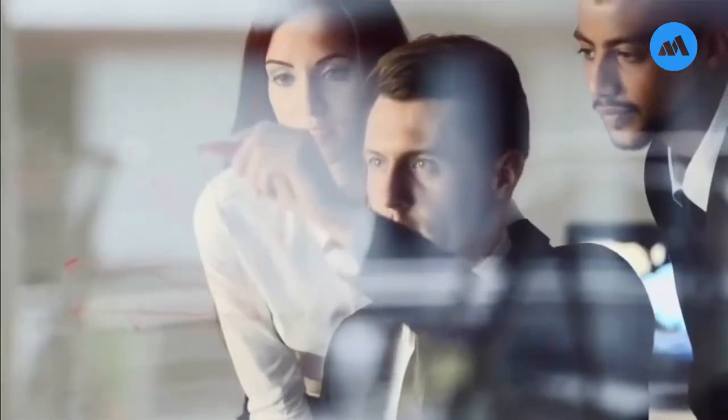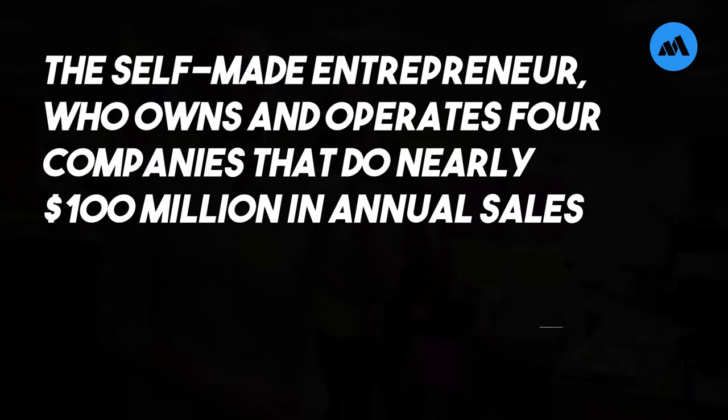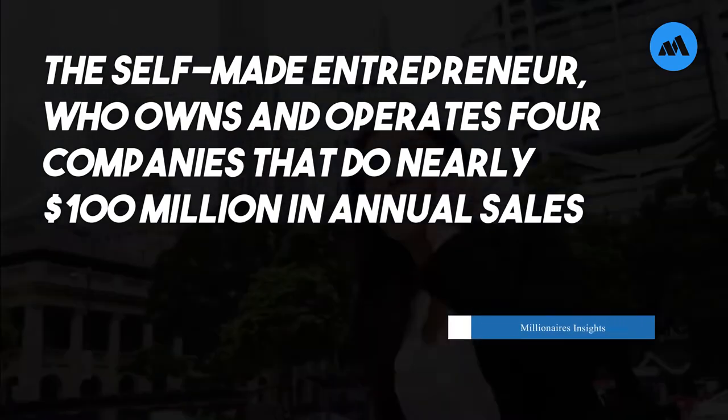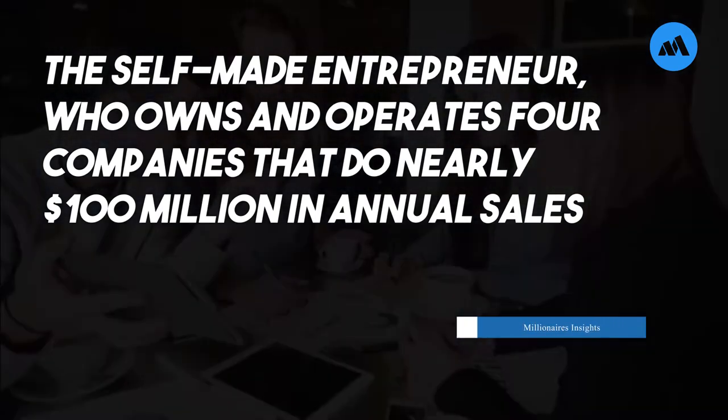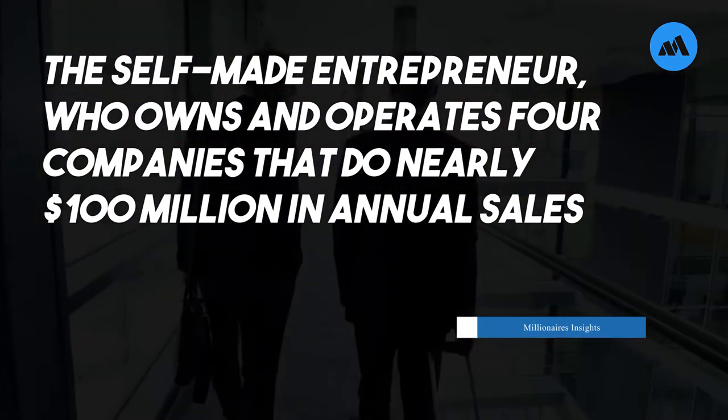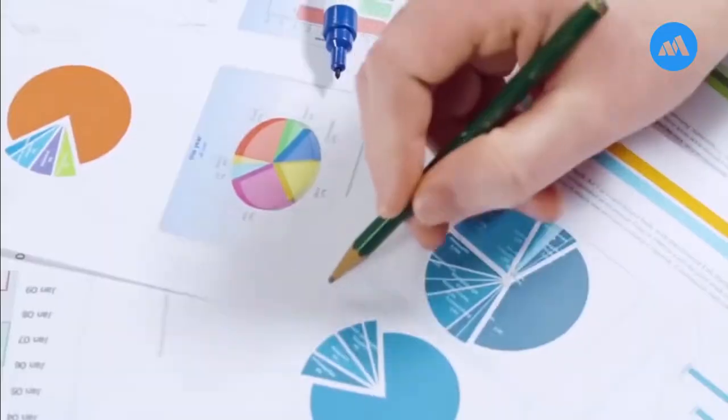He writes in the Millionaire Booklet, How to Get Super Rich. A self-made entrepreneur who owns and operates four companies that do nearly $100 million in annual sales went from broke to seven figures by following a few simple steps.